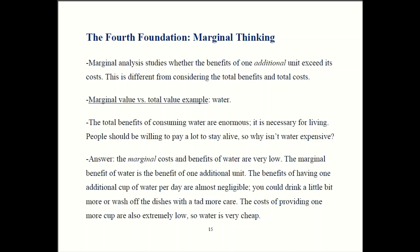By marginal thinking, I mean looking at the costs and benefits of one additional unit. This is distinct from looking at the total costs and total benefits. Here is the standard example that makes that distinction very clear.